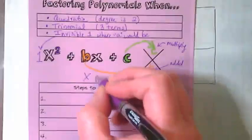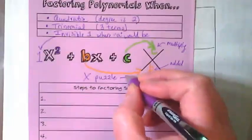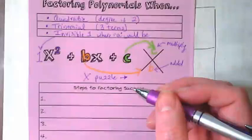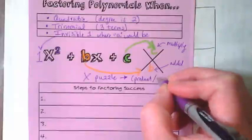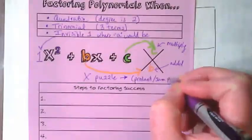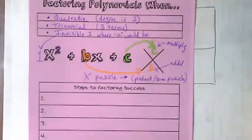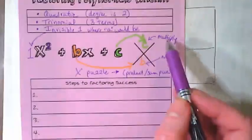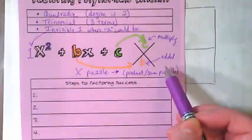We have been calling this an x puzzle. I've also seen this reference by other algebra teachers as a product sum puzzle. Why product sum? We get a product when we multiply, we get a sum when we add.